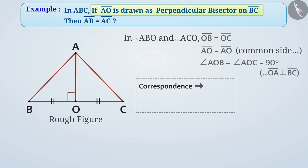By this, we can conclude them corresponding. So by SAS criteria, we can say that triangle ABO is congruent to triangle ACO.